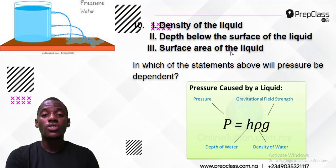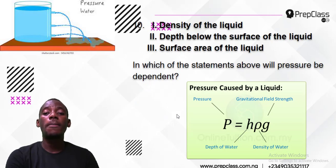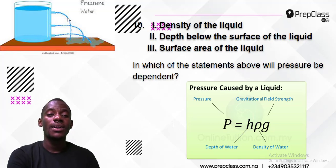So the answer is 1 and 2, because the pressure in liquid is dependent on the depth or the height and the density. That is the answer, like you have it there.